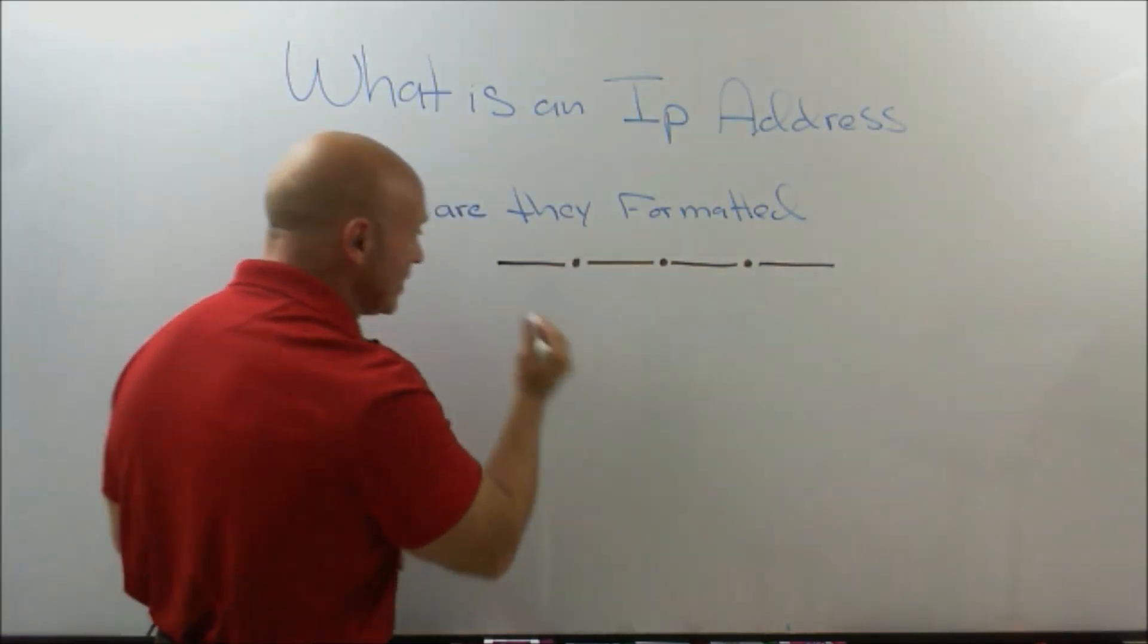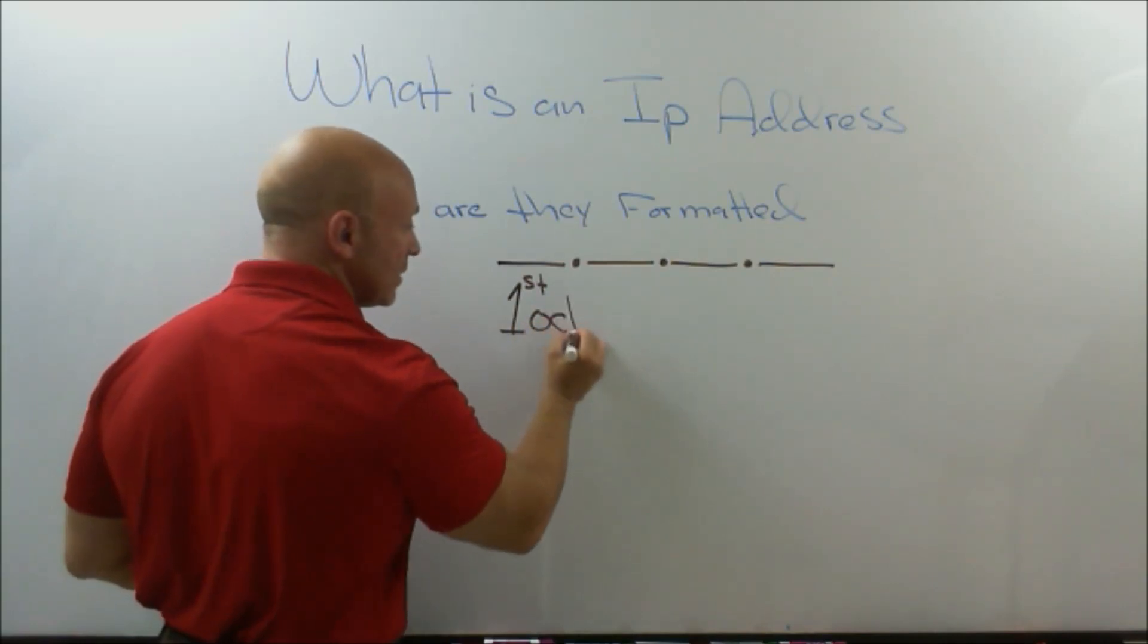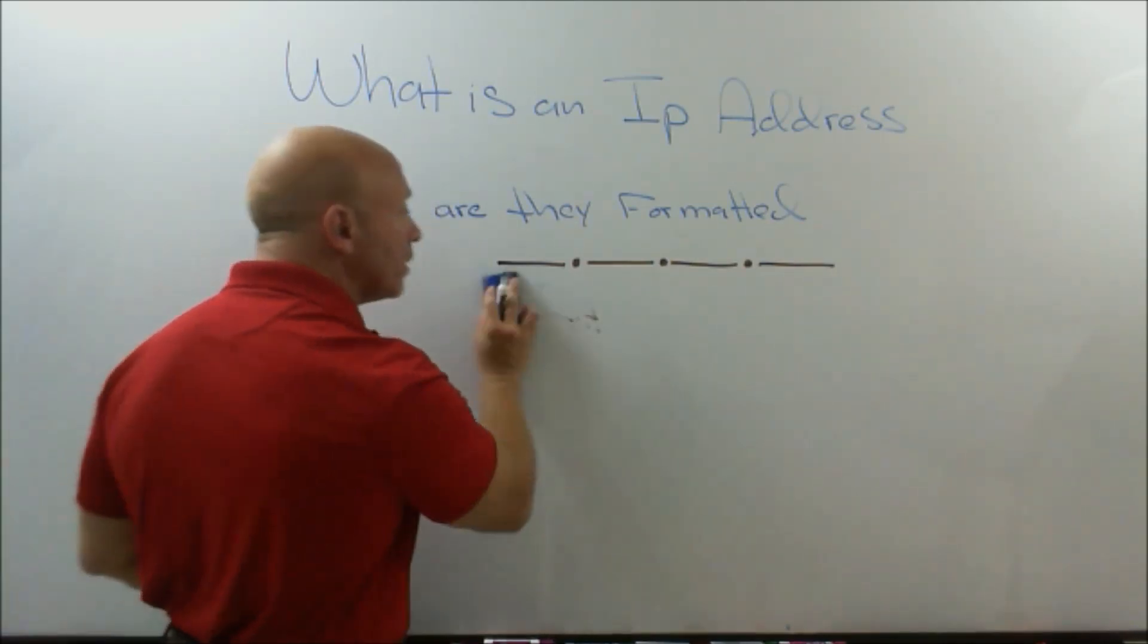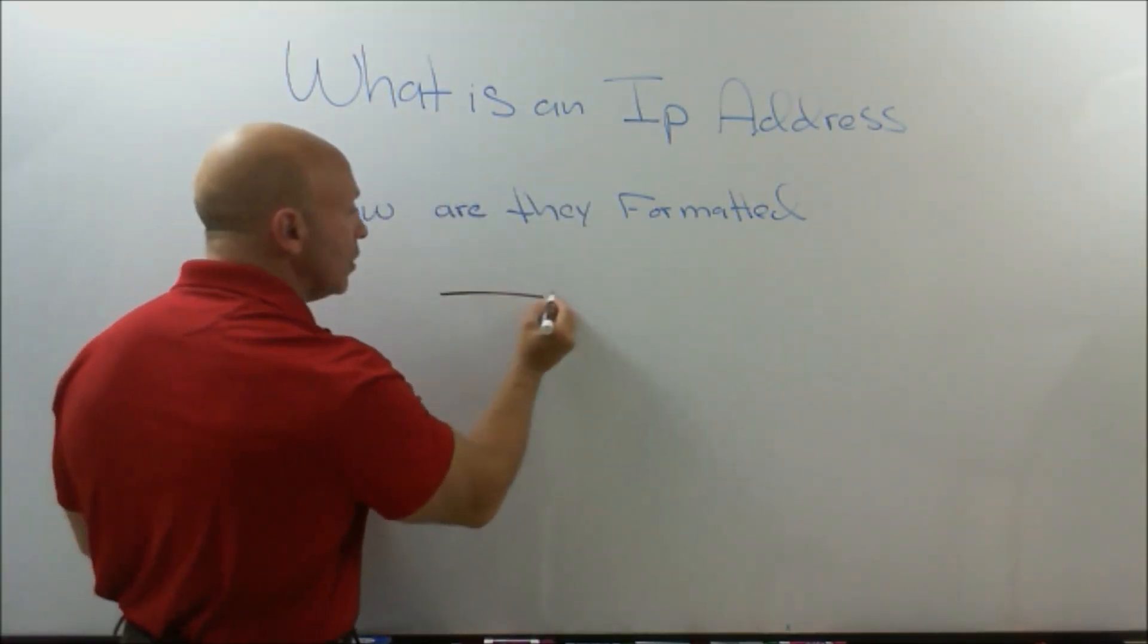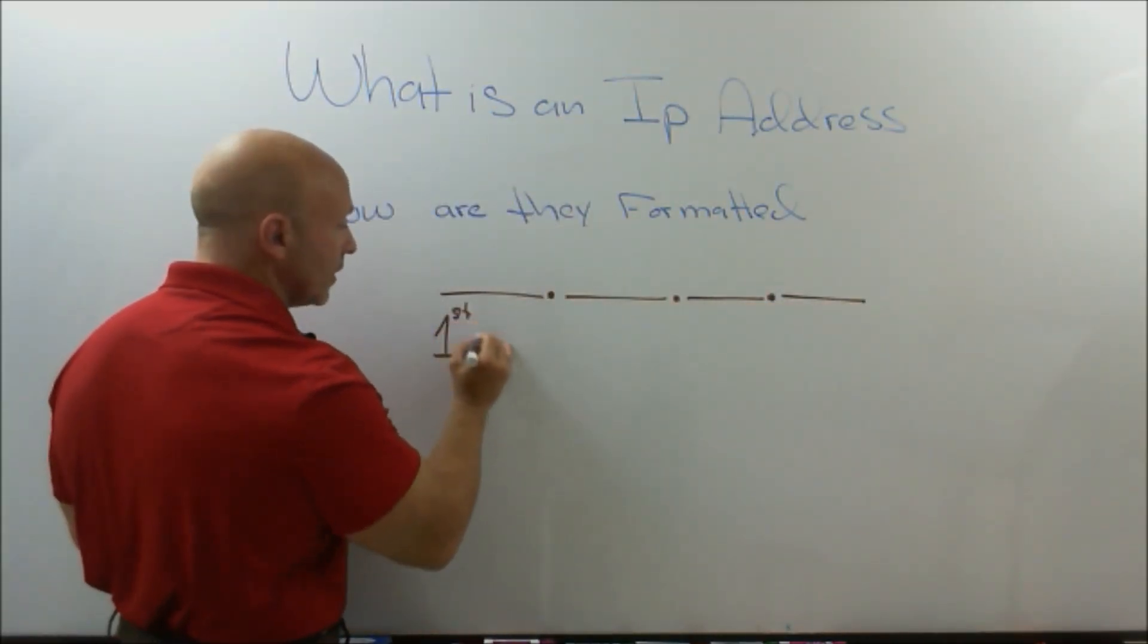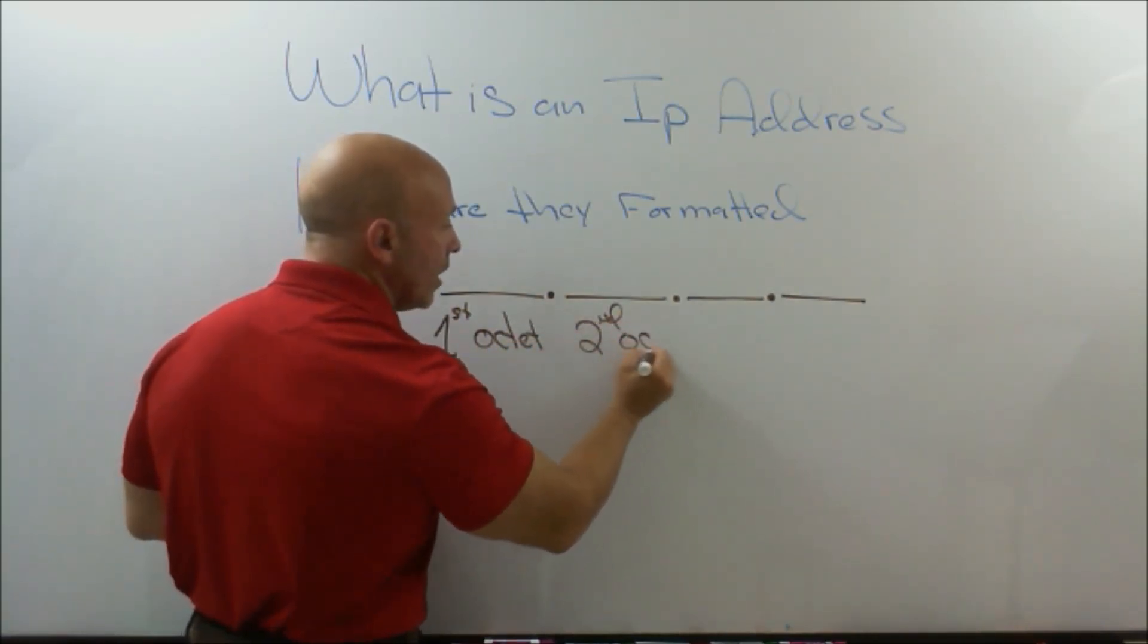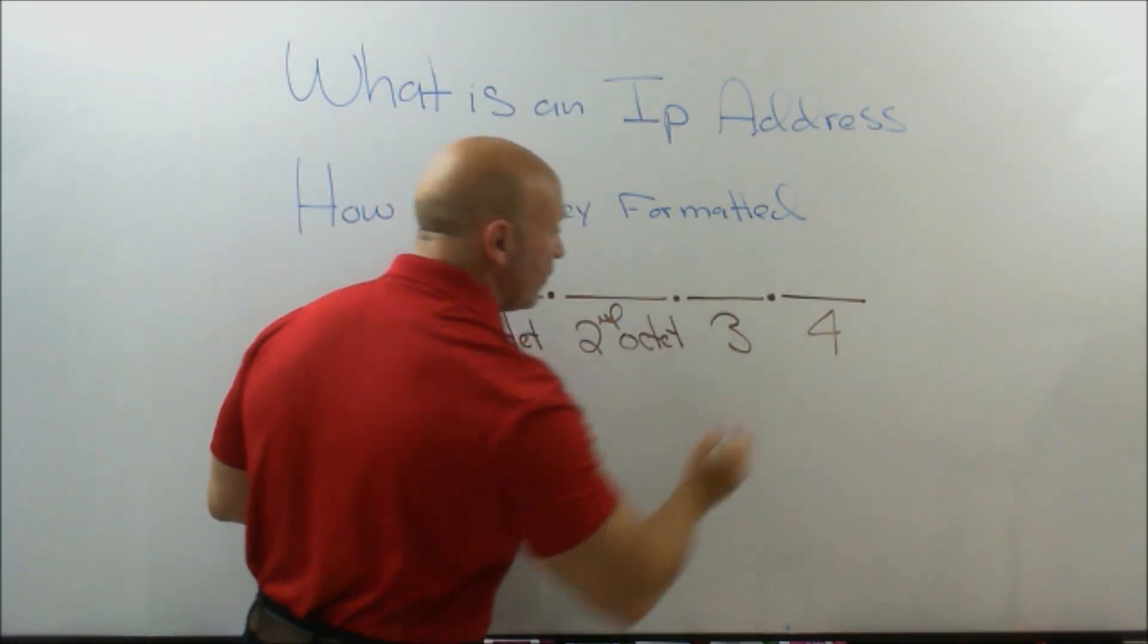You have four different octets, this being the first octet, this being the second. Let me make it a little bit bigger because I don't want to confuse you. I want you to make sure you see everything clearly and correctly. So let's make it nice and big. So this would be the first octet, this is the second octet, third and fourth.